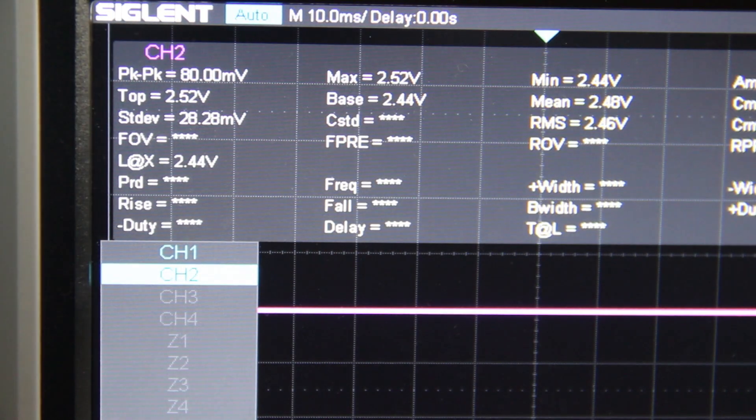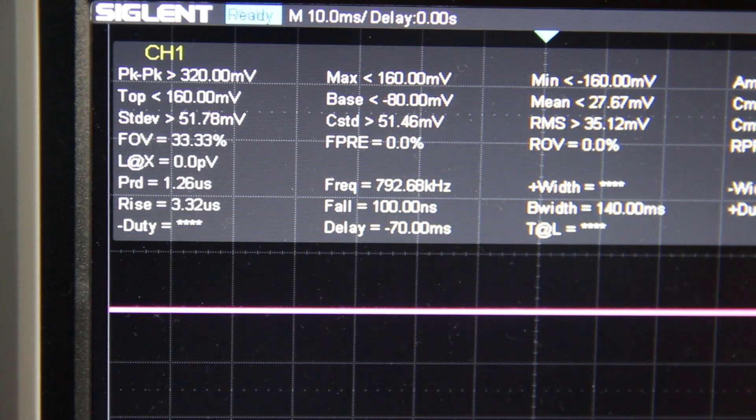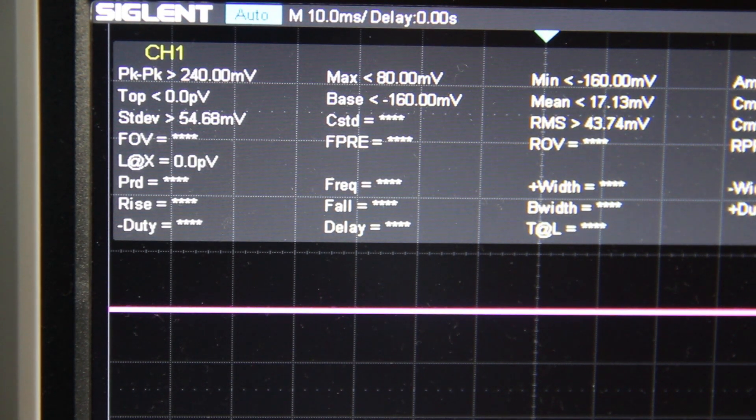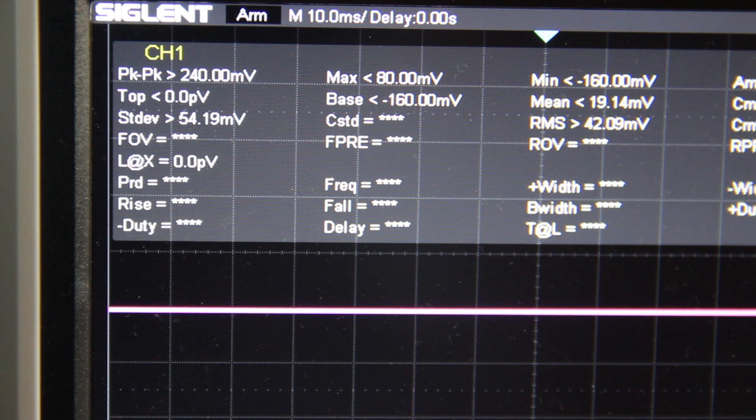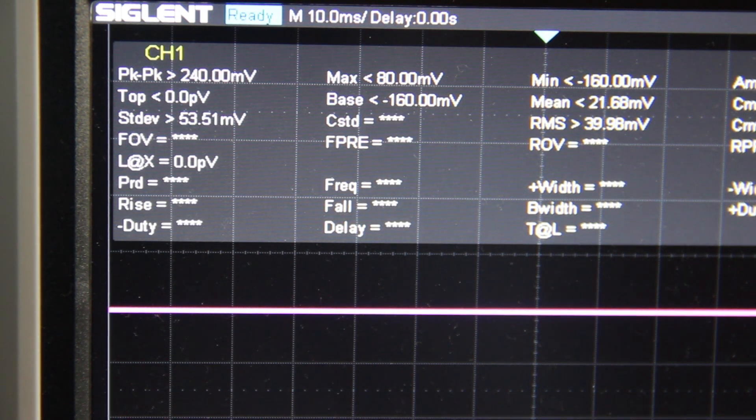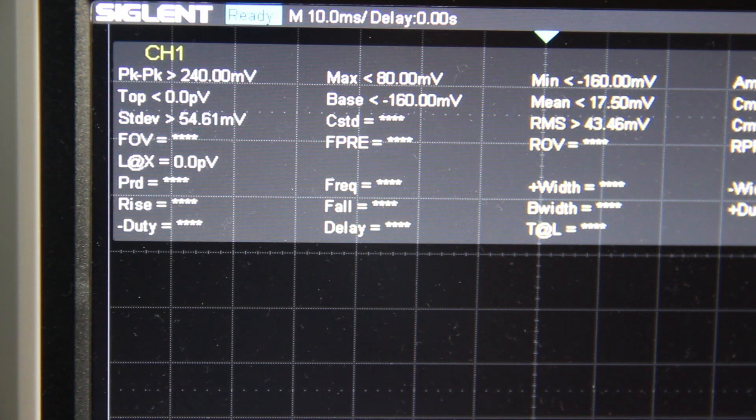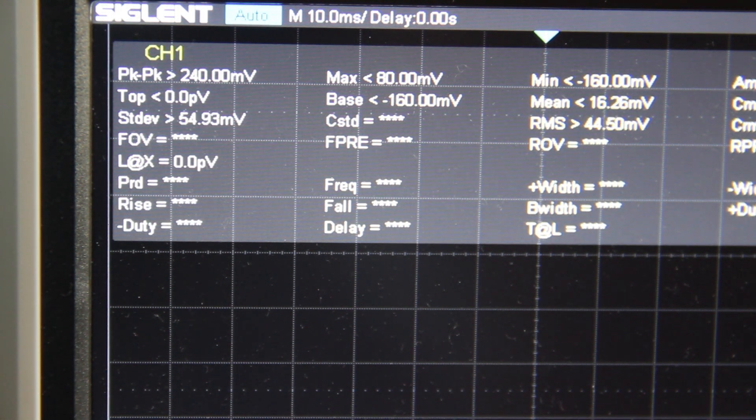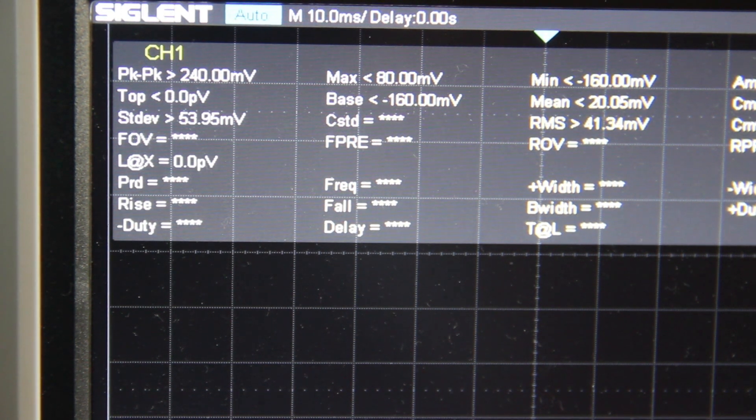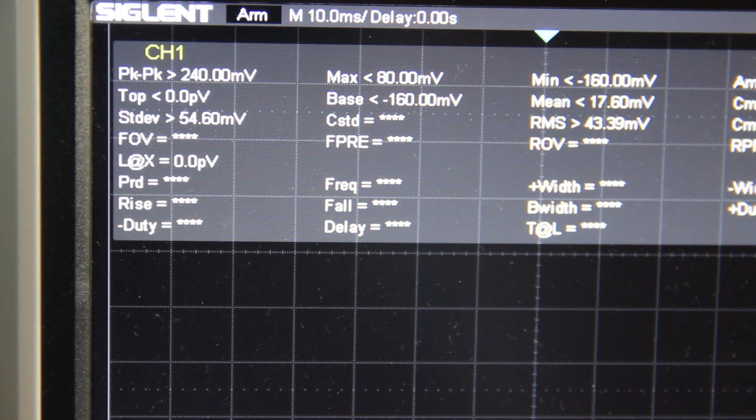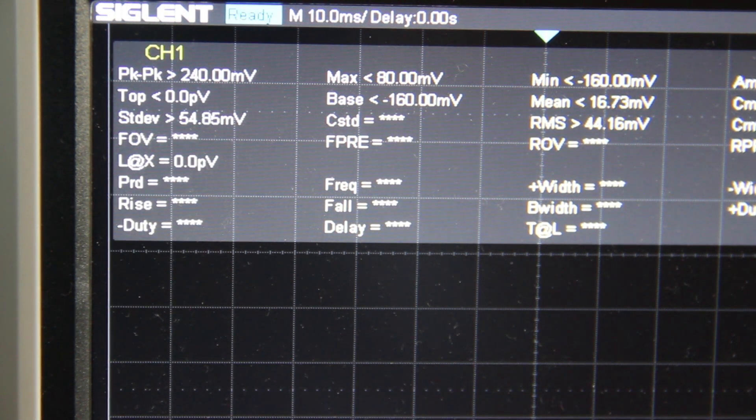So let's switch this to channel one. The standard deviation is varying a lot. Let's put the sense wire back in its position, which is over here.